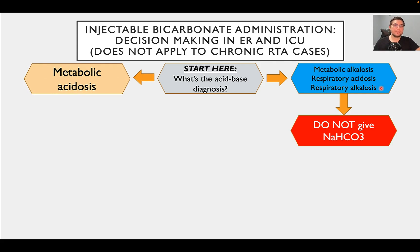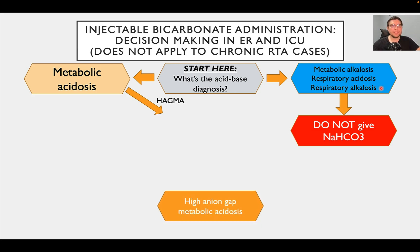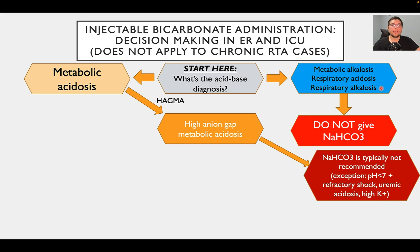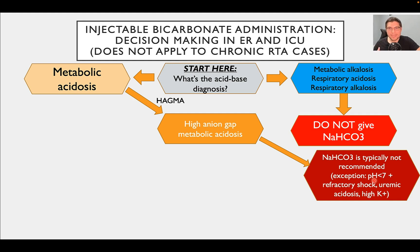If your patient has metabolic acidosis, you may want to continue thinking about possible bicarbonate administration. If the type is high anion gap metabolic acidosis, bicarbonate may not be ideal because many of the unmeasured anions will get converted to bicarbonate later. The exception might be cases where pH is extremely low — say, a dog with pH of 6.8, less than 7 — with refractory shock on vasopressors, very low blood pressure, possible uremic acidosis, and high potassium. With that combination of super low pH, refractory shock, high potassium, and uremic acidosis, you may consider sodium bicarbonate — though such cases are rare.